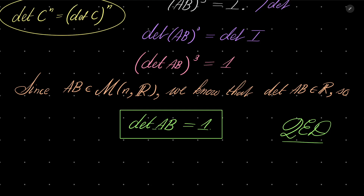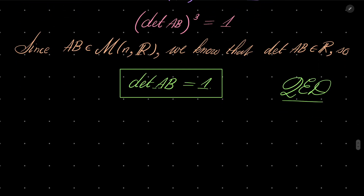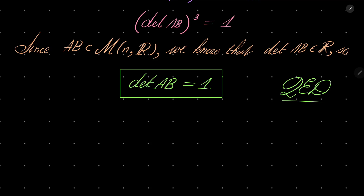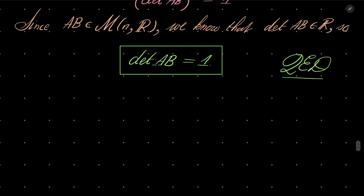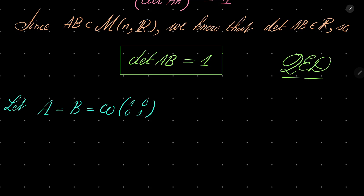We know that our result is true for square matrices with real entries — very important, with real entries. What about complex entries? Well, it's probably not true, because we used in a substantial way the fact that this equation has only one solution in real numbers. In complex numbers that is no longer the case. So we probably guess it's not true in complex numbers, and to show that we will consider the following counterexample.